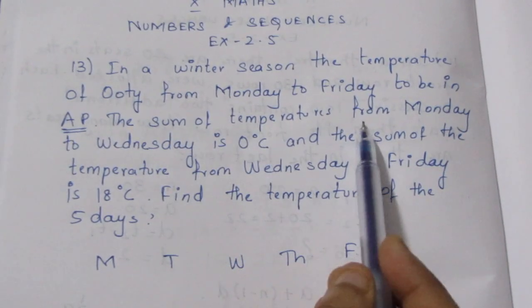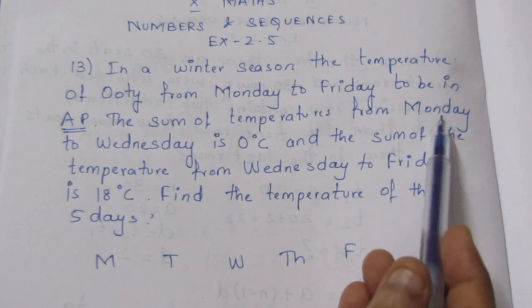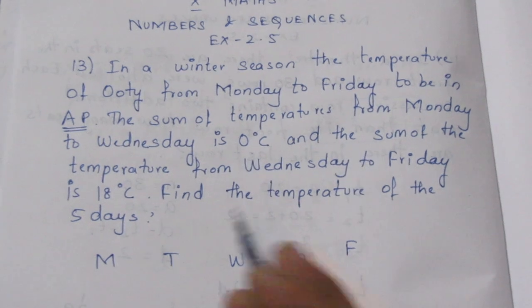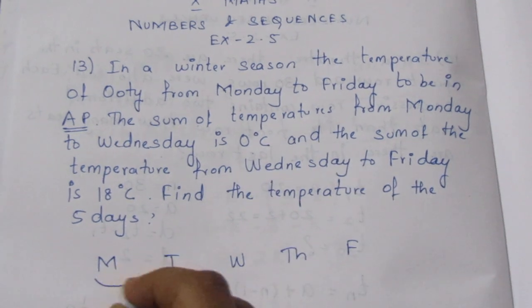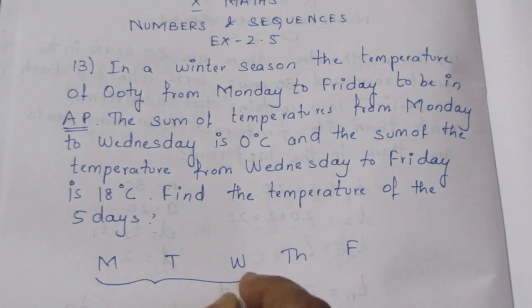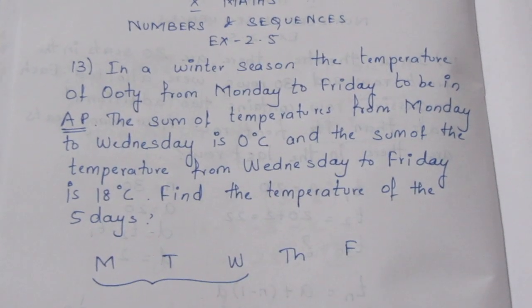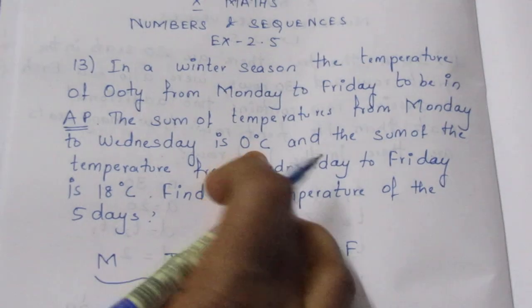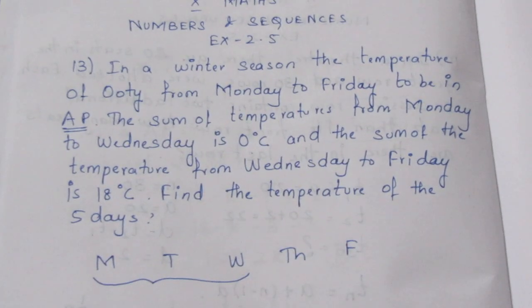The sum of the temperatures from Monday to Wednesday is 0 degrees. So from Monday to Wednesday, when we add the sum, we get zero degrees.